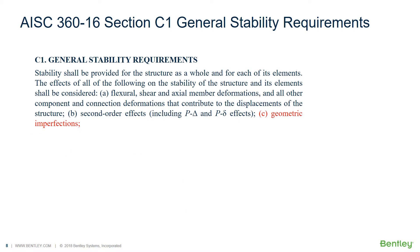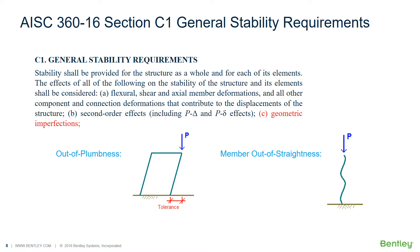Effect C: Geometric imperfections. The code of standard practice provides tolerances for the erection of the structure. These can result in a structure that is out of plumb. The vertical loads acting on this out-of-plumb structure induce additional design forces into the structure. The material standards allow tolerances in the production of the members, resulting in member out of straightness. The axial load acting on this curved member induces additional design forces into the member.